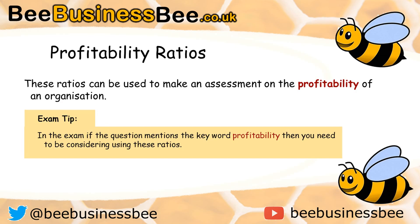First let's start by looking at what's meant by the term profitability ratio. These are ratios that can be used to make an assessment on the profitability of an organisation. Now there's a really important exam tip here: if the question mentions the keyword profitability then you're going to have to consider using one of these ratios.